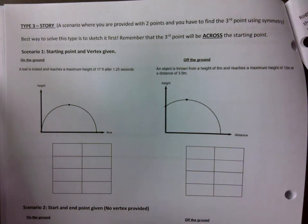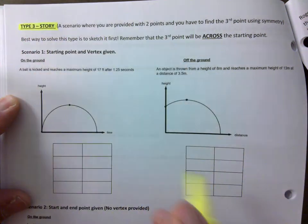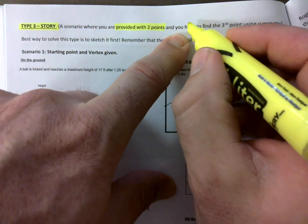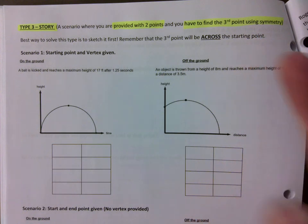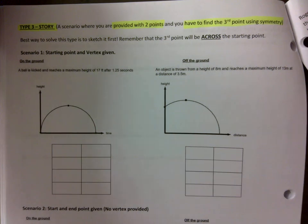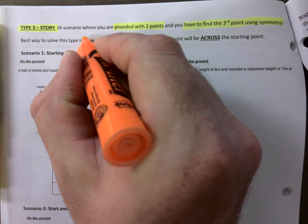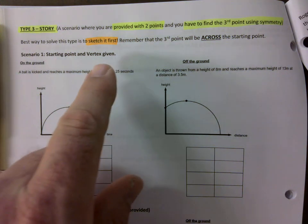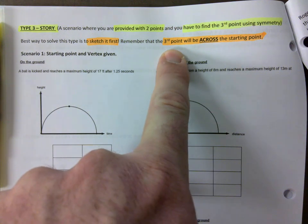So here we go, Type 3, the story type. That's the name I give it, it's not like you're gonna find this in a textbook. But Type 3 is a story and the main kicker here is you'll be provided with two points and you most likely have to find a third point using symmetry, using the fact that this parabola splits in half.